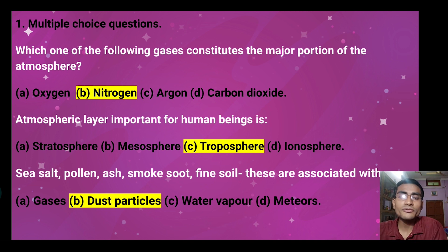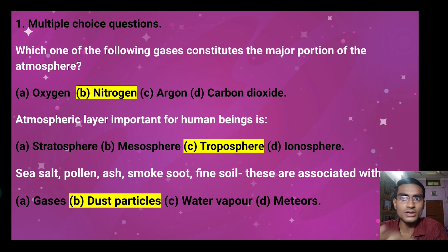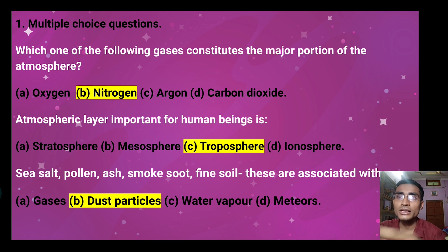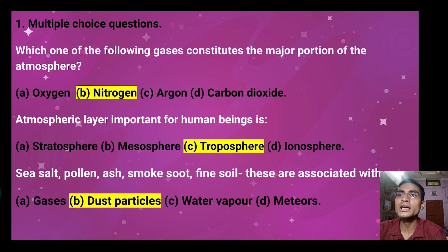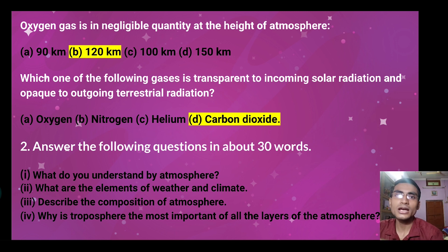Weather phenomena also occur in troposphere. Regarding aerosols — sea salt, pollen, ash, smoke, and fine soil are all associated with aerosols, as these are all dust particles. Water vapor is not an aerosol as it belongs to a different category. Gases like nitrogen, oxygen, carbon dioxide are different from aerosols. So sea salt, dust particles, and fine soil are the correct aerosol examples.